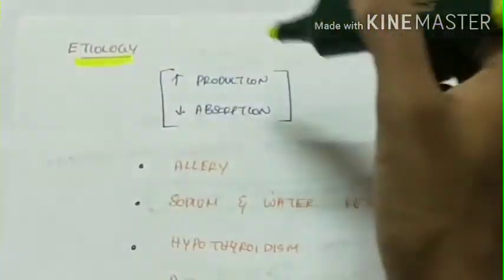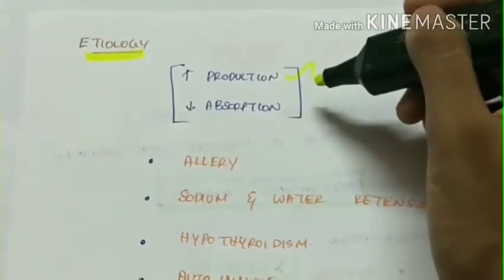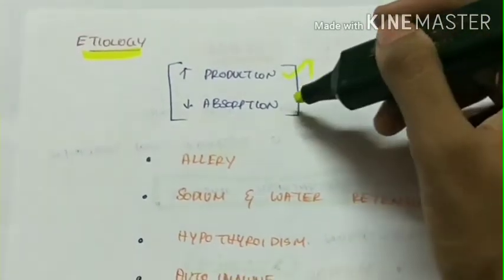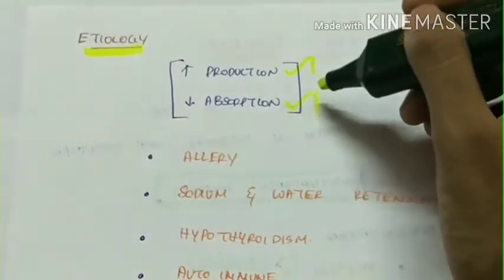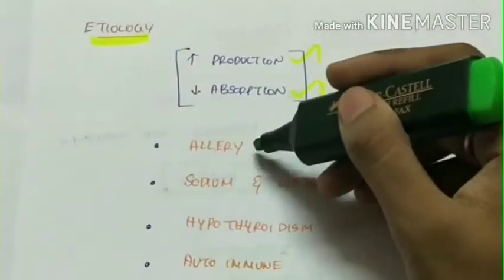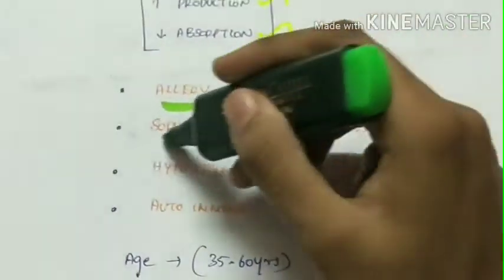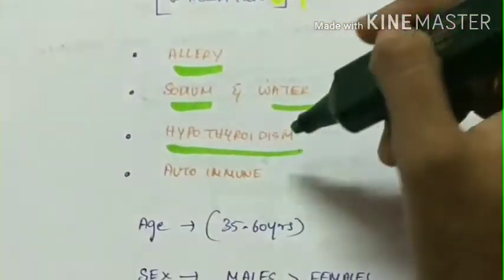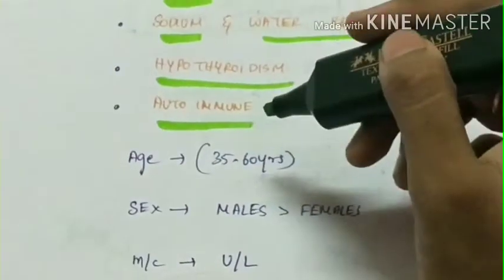Etiology of Meniere's disease: it is either due to increase in production of endolymph or decreased absorption of the endolymph. The common etiologies are allergy, sodium and water retention, hypothyroidism, and autoimmune cause.